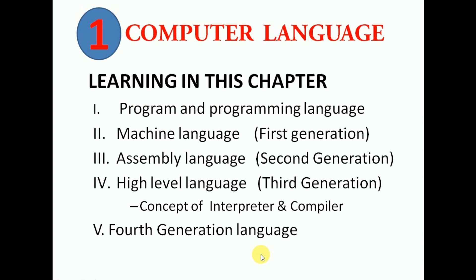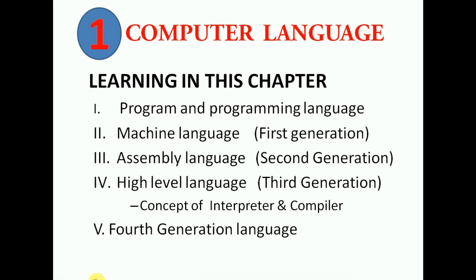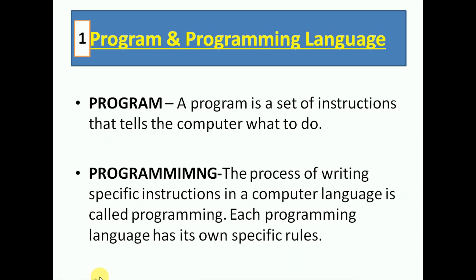What we are going to cover in this chapter is: program, programming language, machine language, assembly language, high level language, and fourth generation languages. A program is a set of instructions that tells the computer what to do.